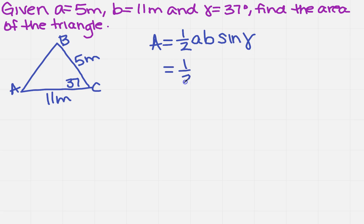Then I just plug in what I know. I know that A is 5, B is 11, and that gamma is 37. So when I put that in the calculator, I get 16.5.